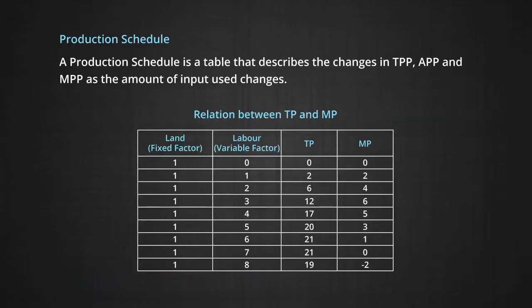The same information can be represented in a production schedule. A production schedule is a table that describes the changes in the total physical product, the average physical product, and the marginal physical product as the amount of the input used changes. The diagrammatic representation of these variables gives us the TPP curve, the APP curve, and the MPP curve, which are shown in the diagram on the screen.